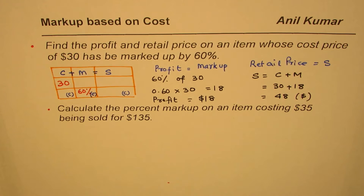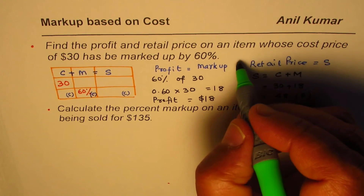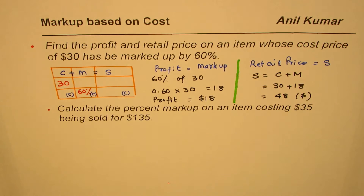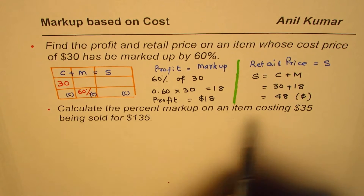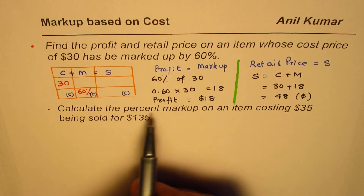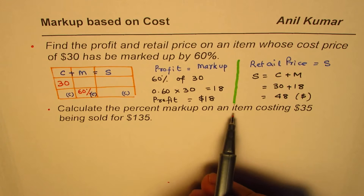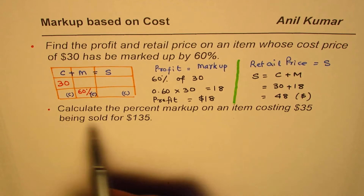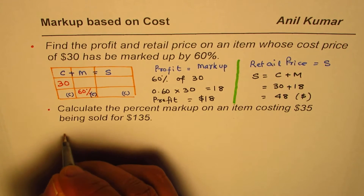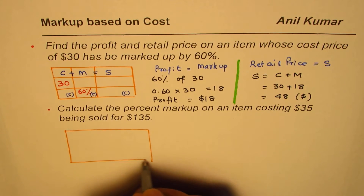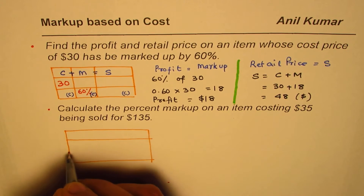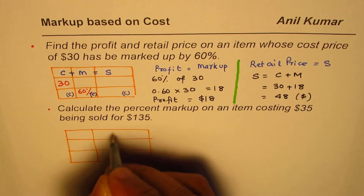The retail price is $48. I hope the concept and method are clear. Now let's look into the second question: calculate the percent markup on an item costing $35 and being sold for $135. Let's make use of the 3 by 3 table to solve it.